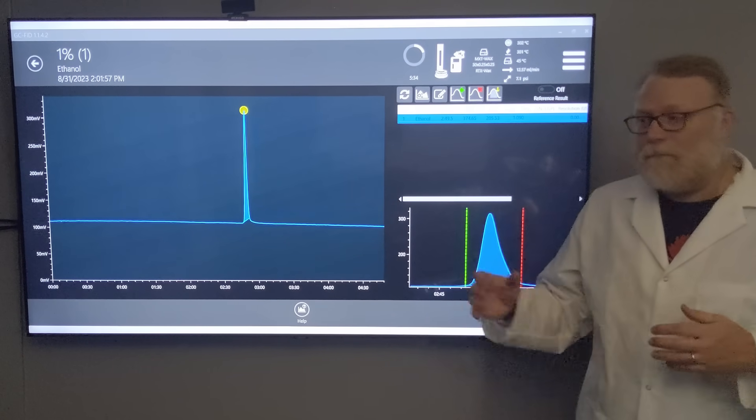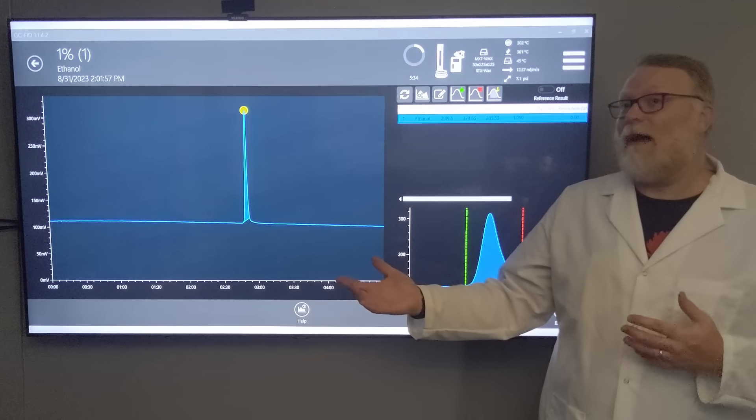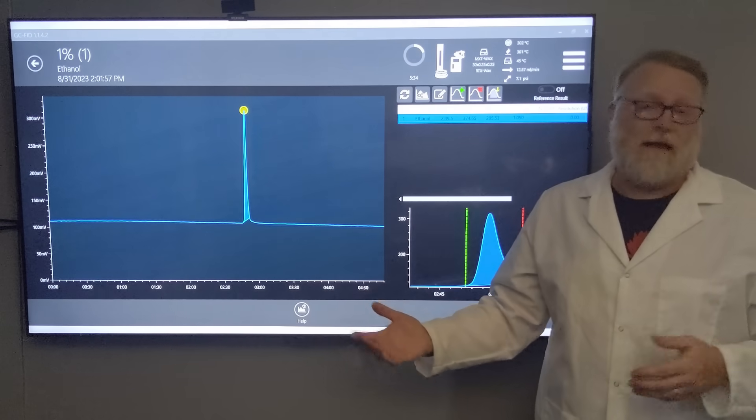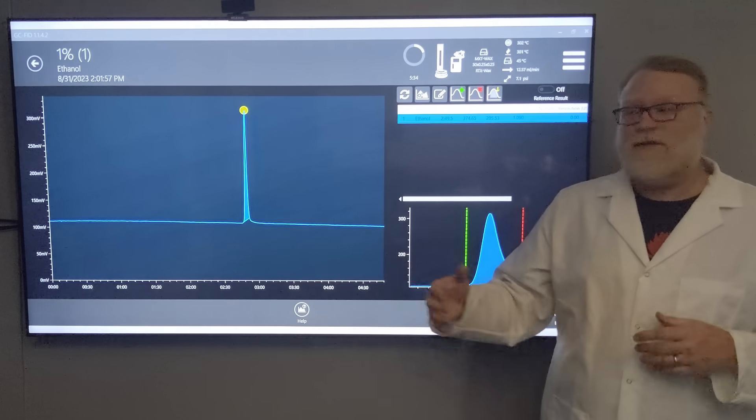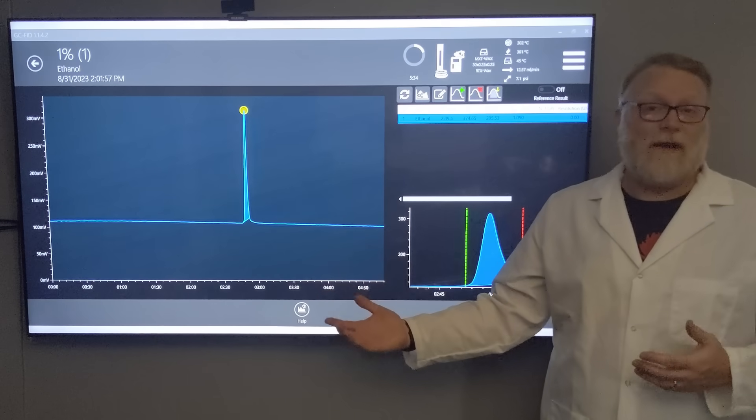How do I know if I run something that's not 1%? How do I know how much is in there? That's where a calibration curve comes into play. We're going to run a theoretical calibration curve and walk through each step.